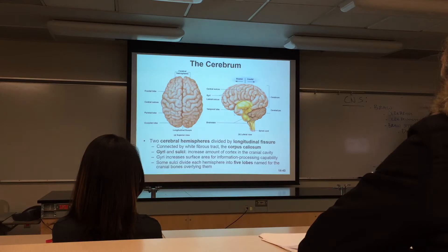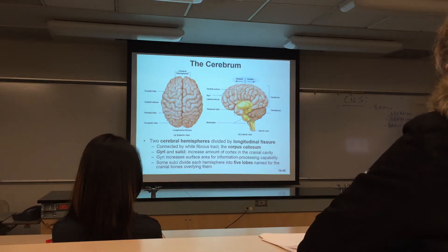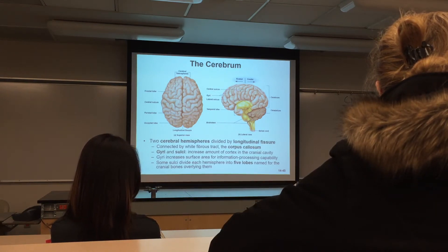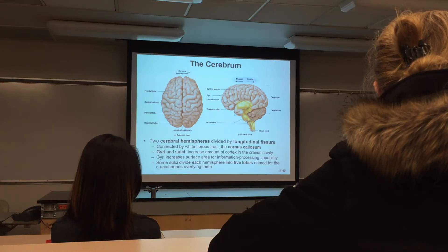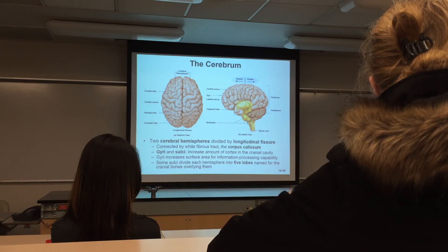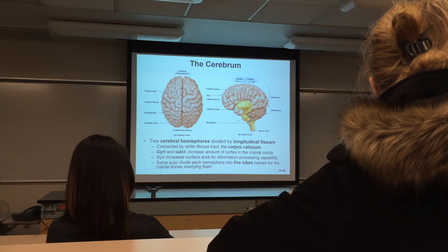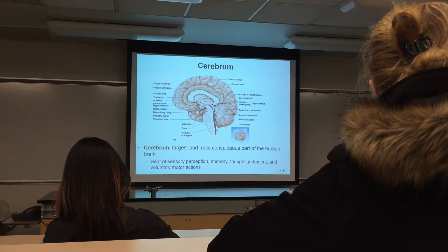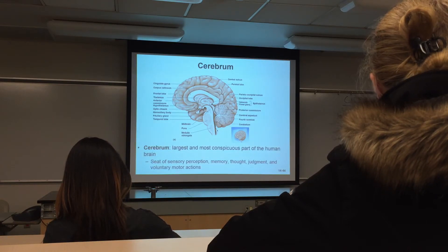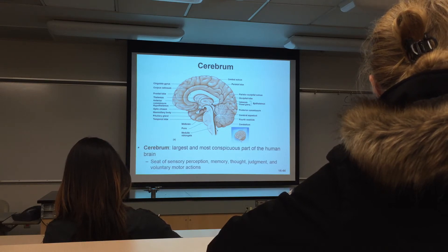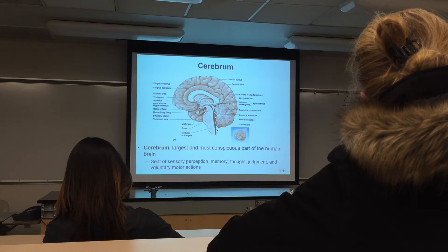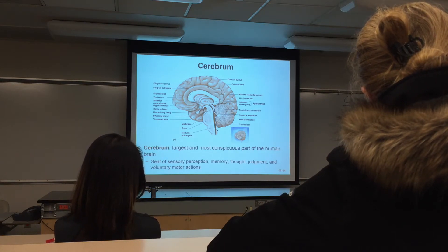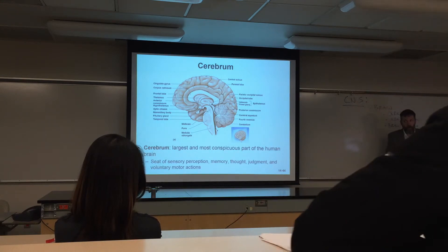Where do you find myelinated axons in the cerebrum? In the white matter. Specifically, axons in the brain and spinal cord run in tracts — outside they run in nerves. There's one distinct nerve tract called the corpus callosum, shown here in section. This tract contains billions of myelinated axons sending information from one cerebral hemisphere to the other and vice versa. To separate the cerebral hemispheres you cut through the corpus callosum, right through the thalamus and third ventricle.